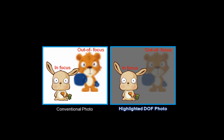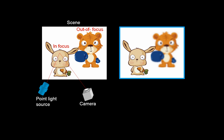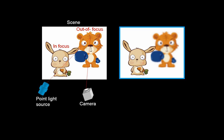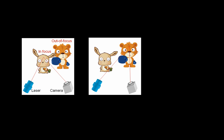The main idea of this paper is to use the change in intensity of a projected light pattern from camera misfocus. When a point light source illuminates an in-focus object, the spot size is small and its intensity is high. However, when a point light source illuminates an out-of-focus object, the spot size is large and the intensity drops. Using this simple phenomenon, we can separate in and out-of-focus objects.